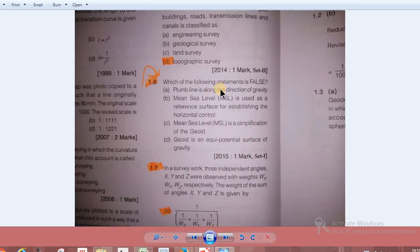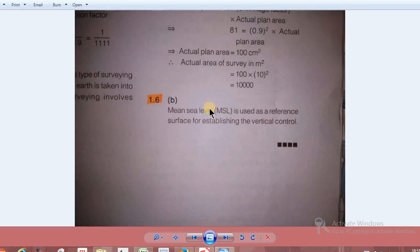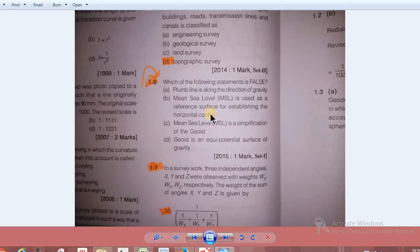The following statement is false: the mean sea level is used for the reference surface for establishing vertical control. The mean sea level is used for horizontal control. The plumb line is along the direction of gravity. The mean sea level is the simplification of a geoid. Geoid is an equipotential surface of gravity.